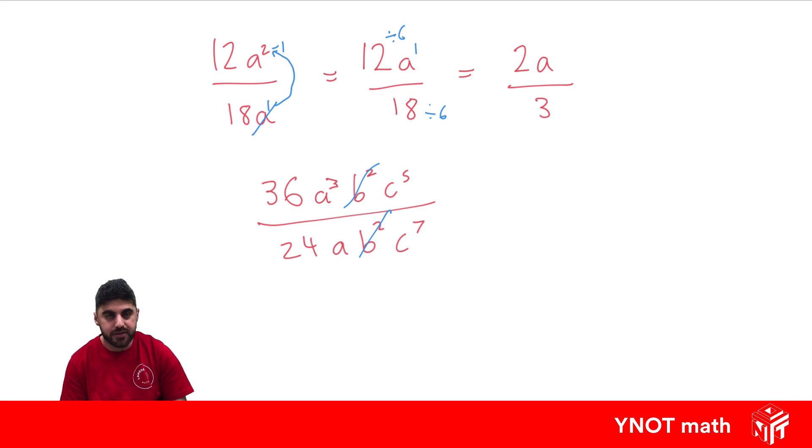Now, for the other ones that aren't exactly the same, we get rid of the small one, and we subtract it from the power of the other one. So out of a cubed and a, remember, when there's nothing there it means power of 1, which one's smaller? Well, that's just a. And its power was 1, and we subtract it from this, so this one becomes 2.